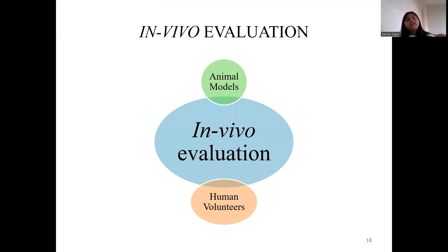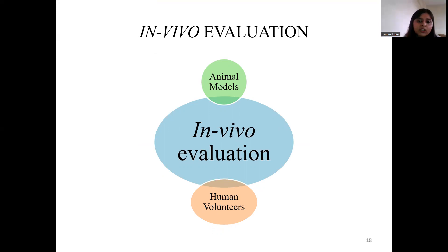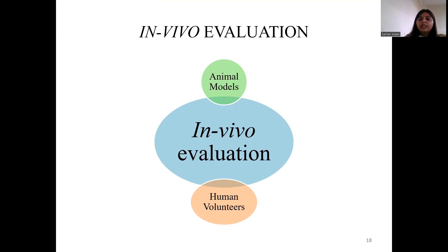In vivo evaluation is performed inside the body and is of two types. First, it can be done in animal models — that is pre-clinical. After that, it can be done in human volunteers — that is the clinical method.